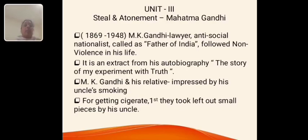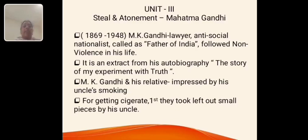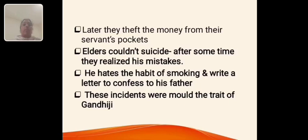Next, Unit 3, Prose. Steal and Atonement by Mahatma Gandhi. M.K. Gandhi was born in the year 1869 and died in 1948. He is a lawyer and social nationalist, called Mahatma and the Father of the Nation. He followed non-violence in his life. Steal and Atonement is an extract from his autobiography, The Story of My Experiments with Truth. While he was a small boy, he was influenced by his uncle's smoking habit, and he stole money to fund it secretly. After some time, he felt ashamed and stopped the habit. He even tried to commit suicide for his mistake, but finally admitted his mistake to his father and decided never to repeat it.